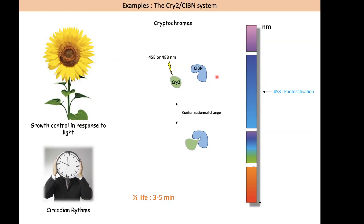I will start with the CRY2/CIB1 system, which are cryptochromes coming from plants. They are implicated in growth control in response to light and also in regulation of the circadian rhythm. This is a bimolecular system composed of a protein called CIBN and a protein called CRY2. CRY2 is sensitive to blue light — upon stimulation there is a conformational change in CRY2 that dramatically increases its affinity for CIBN. The half-life of this interaction is about three to five minutes.